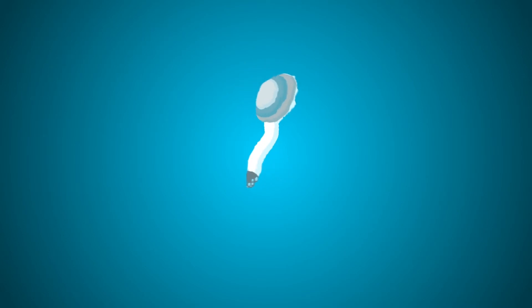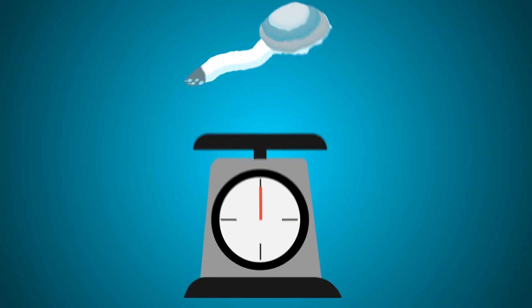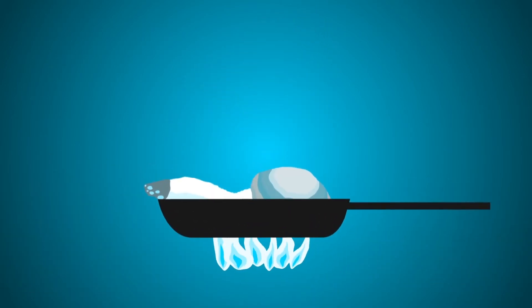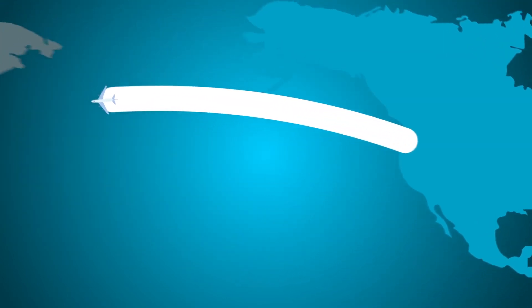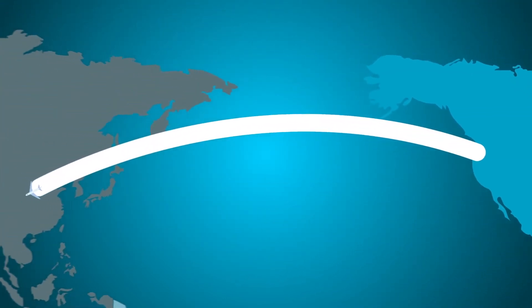An adult geoduck weighs around one to three pounds. And in Asia, their meat is a prized delicacy. About 90% of the geoducks harvested in the U.S. are sent across the Pacific.